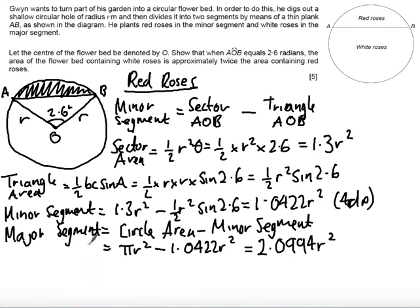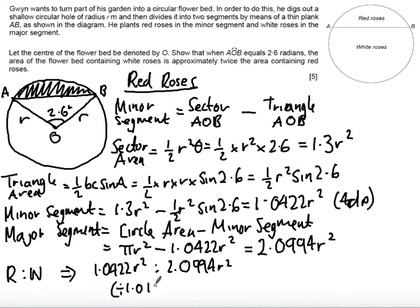So now I have the major segment area and the minor segment area, I'm just looking at the ratio. So I want to do the ratio of red to white is given as 1.0422 R squared to 2.0994 R squared. I'm going to divide both sides to get 1 on the left hand side, dividing by 1.0422 R squared.